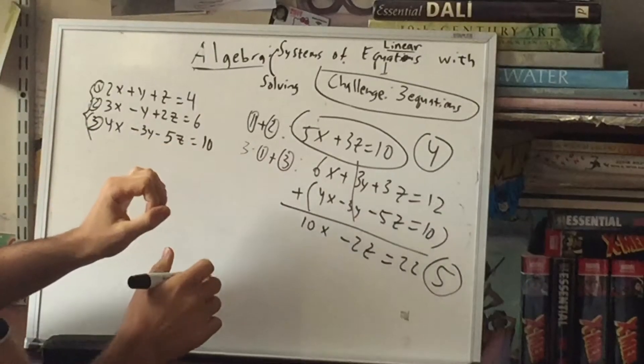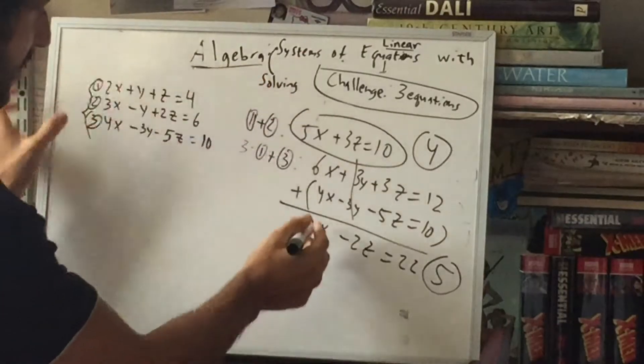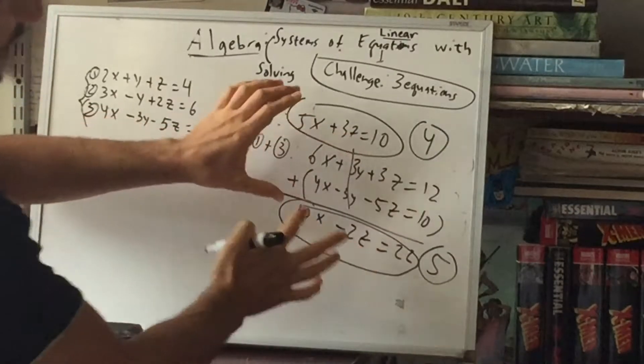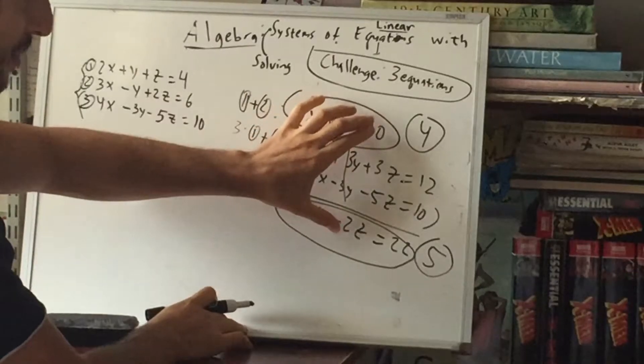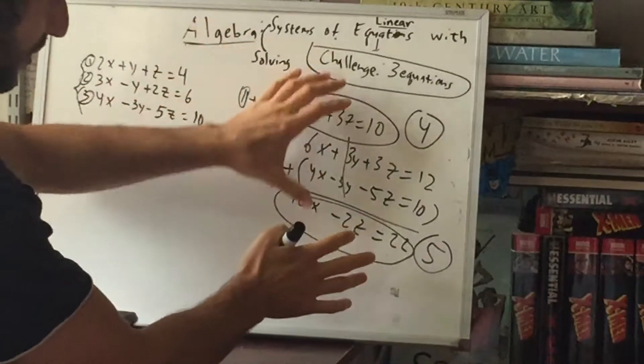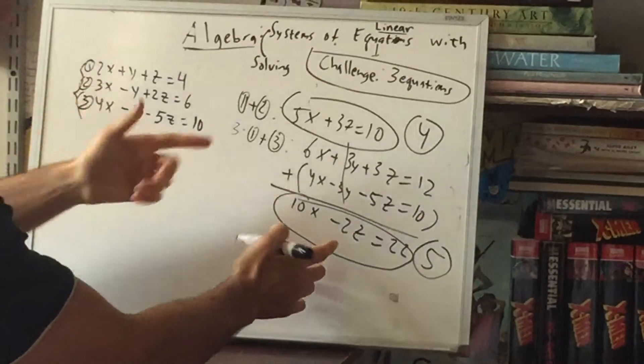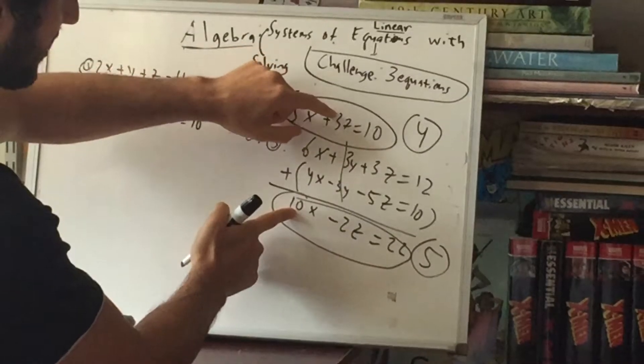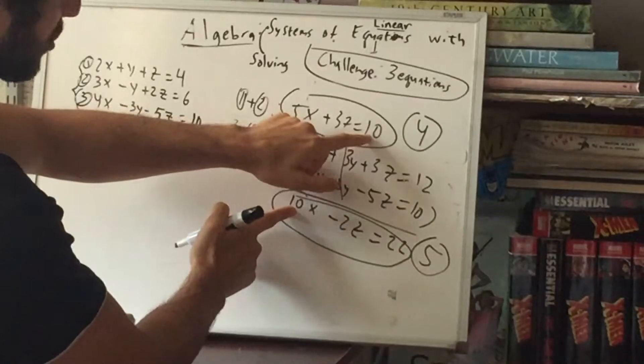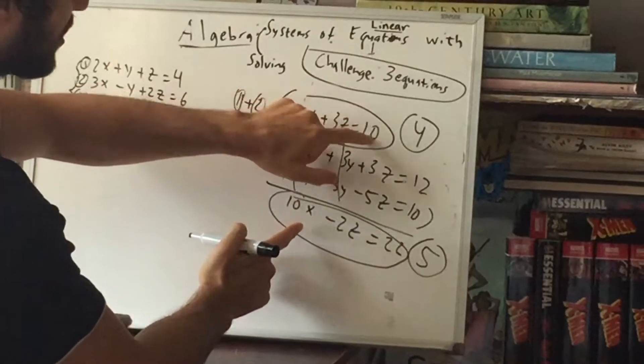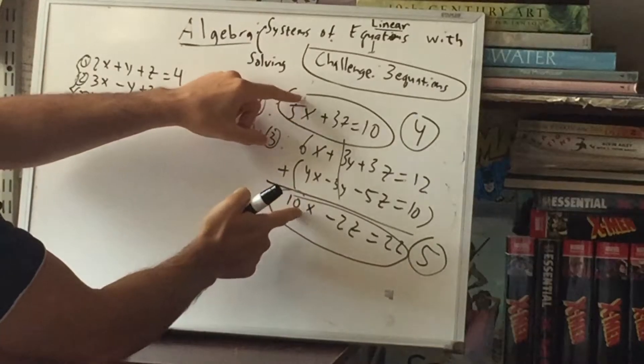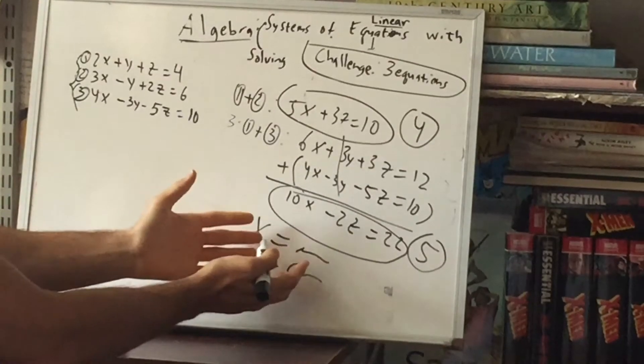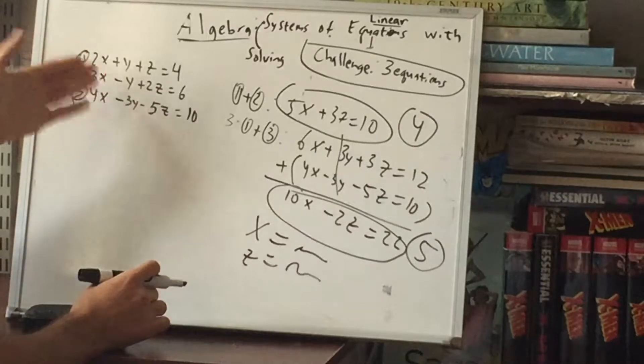All right. So I'm not going to even solve this. But here's the idea. We have two equations now. And if you look at the variables, they only have x's and z's. Now, we know how to solve this because it's two equations with two variables. So what we would do is solve this system using our traditional techniques. So, for example, since that's a 10 and that's a 5, maybe you double this one to turn this into 10x plus 6z equals 20. And then subtract them because the 10s will cancel. So that'll give you a solution for x is something, z is something. And now you can plug this into any one of these and find your y.